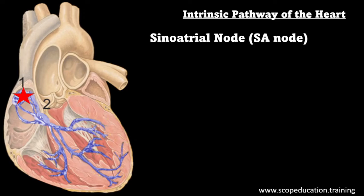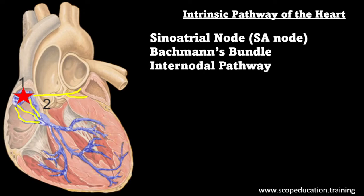To depolarize the left atrium, there's a pathway that branches off of the SA node and heads past the septum to the left atrium. This is called the Bachmann's bundle. To further depolarize the right atrium, the electrical impulses head down the internodal pathways to the second pacemaker node, which is called our atrioventricular node or AV node.